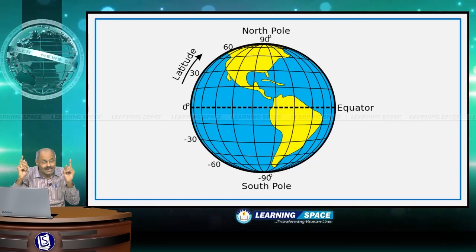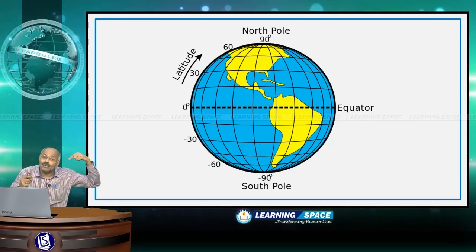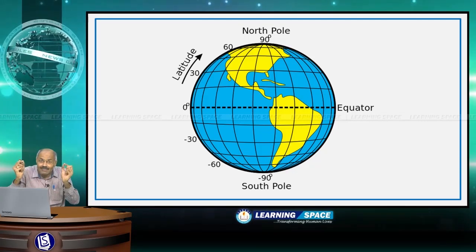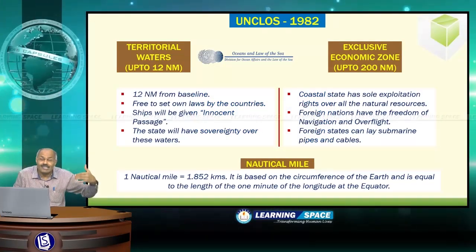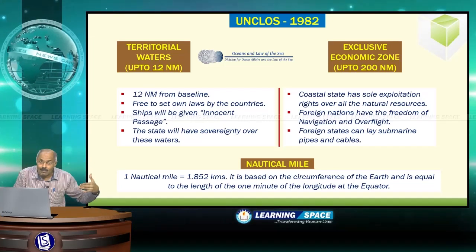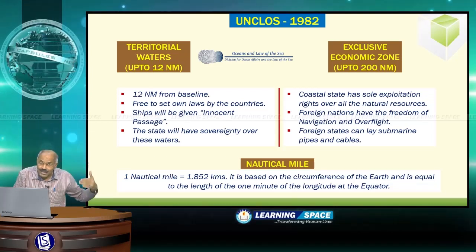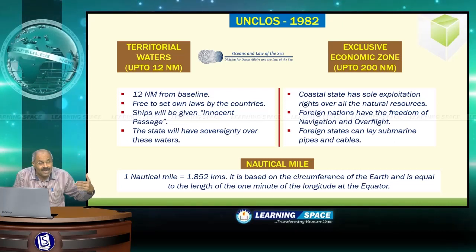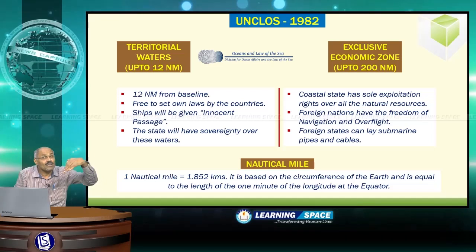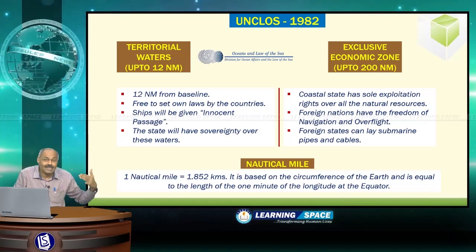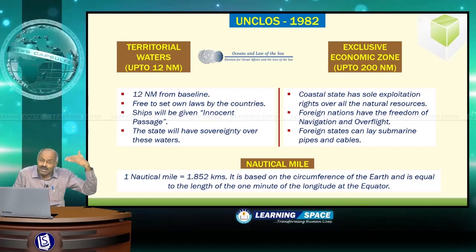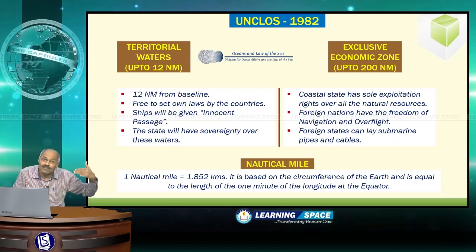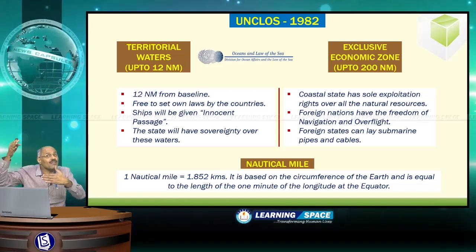The distance at the equator corresponding to one minute of longitude is known as one nautical mile. One nautical mile equals 1,852 meters, or 1.852 kilometers. Distances over sea are measured in nautical miles, and the speed of ships is expressed in knots — one knot equals one nautical mile per hour. Territorial waters extend up to 12 nautical miles from the baseline.